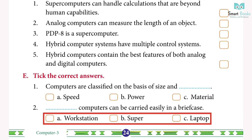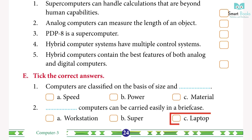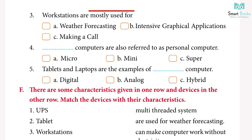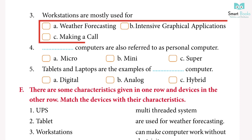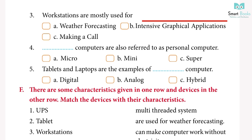2. ___ can be carried easily in a briefcase. a) Workstation, b) Super, c) Laptop. Answer: c) Laptop. 3. Workstations are mostly used for: a) Weather forecasting, b) Intensive graphical applications, c) Making a call. Answer: b) Intensive graphical applications.